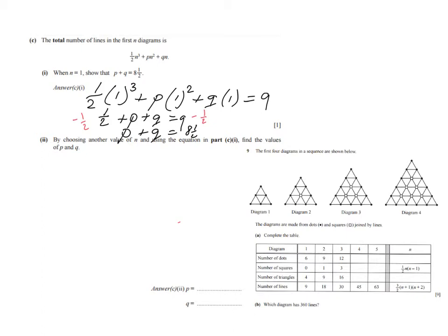So let's choose another value for n. And let's not go too high. Let's take 2. And if I take for n as 2, what will it then become? It's going to say a half, 2 to the power of 3 plus p, 2 squared plus 2q equals. And how many lines, the total number of lines in the first two diagrams are there? Well, the first one 9, the second one 18. So in total, 9 plus 18, 27. So that has to equal 27.